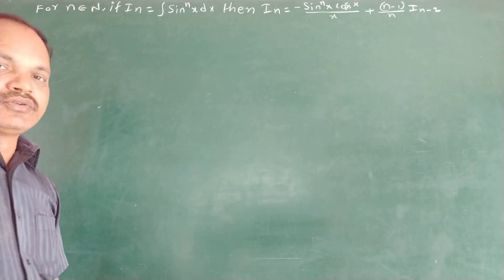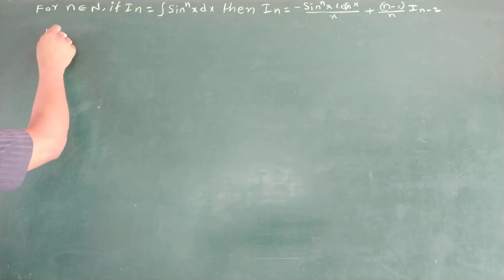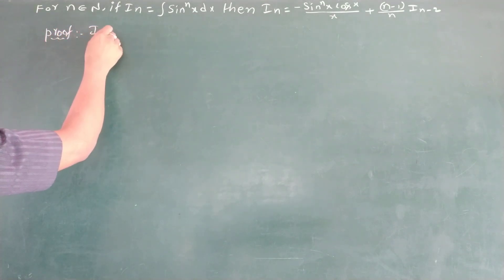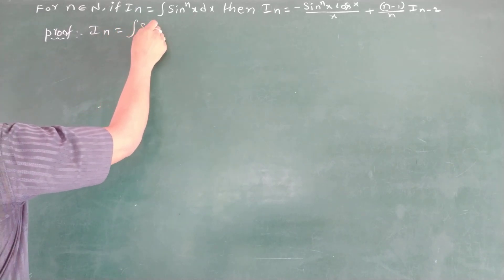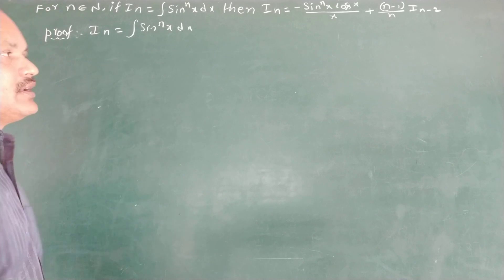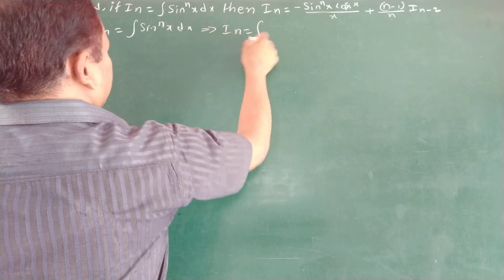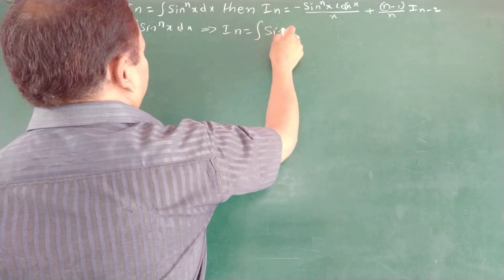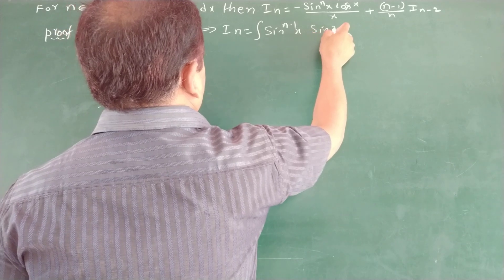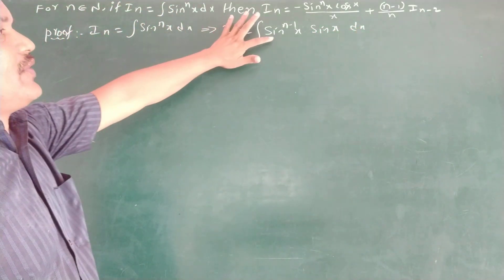We have to prove this in an easy method. Take Iₙ equal to the integral of sinⁿx dx. This can be written as Iₙ equals the integral of sinⁿ⁻¹x times sin x dx.